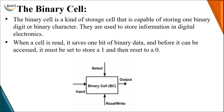Using the address of the binary cell, we first select the binary cell, then based on the control signal — read or write — we either retrieve data from the binary cell or store new data into it. When read is enabled, data is taken out through the output terminal. When write is enabled on the control signal, it provides a path from the external inputs through the input terminal to store new data into the binary cell.